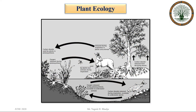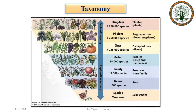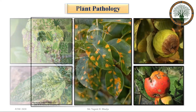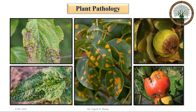Another branch is plant ecology. Plant ecology studies the distribution of plants, how environmental factors affect plants, and the interaction between plants and other organisms. Another branch is taxonomy, in which plants are classified according to their characteristics and interrelationships. With the help of plant taxonomy, we are able to identify plants and understand their characteristics.